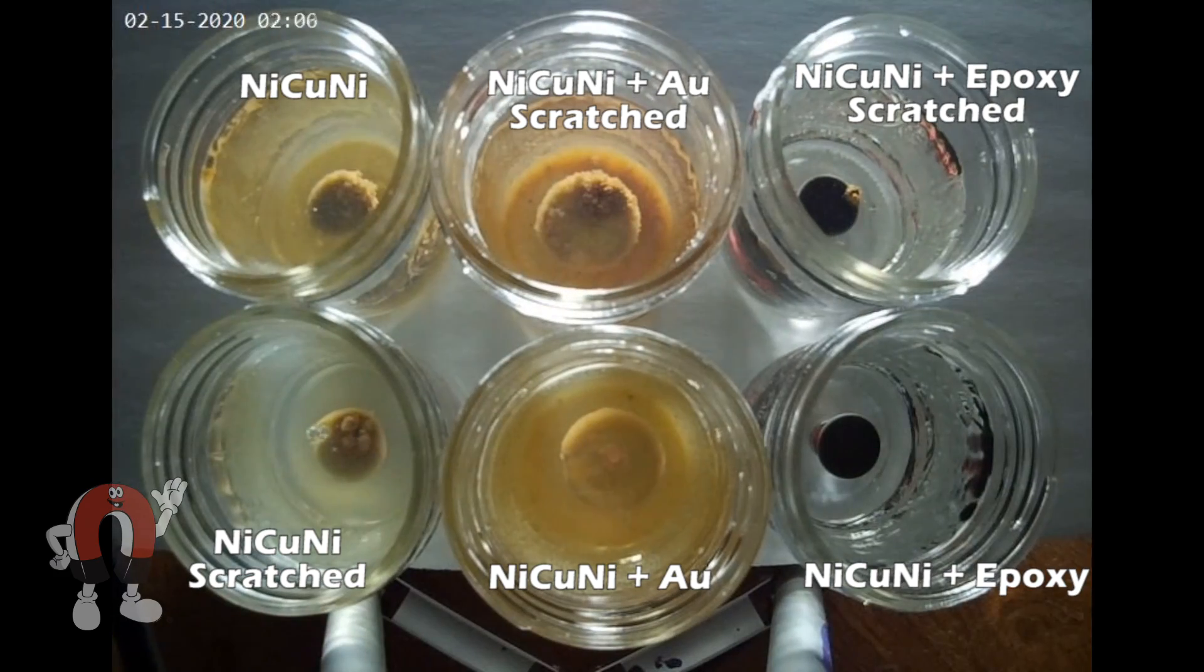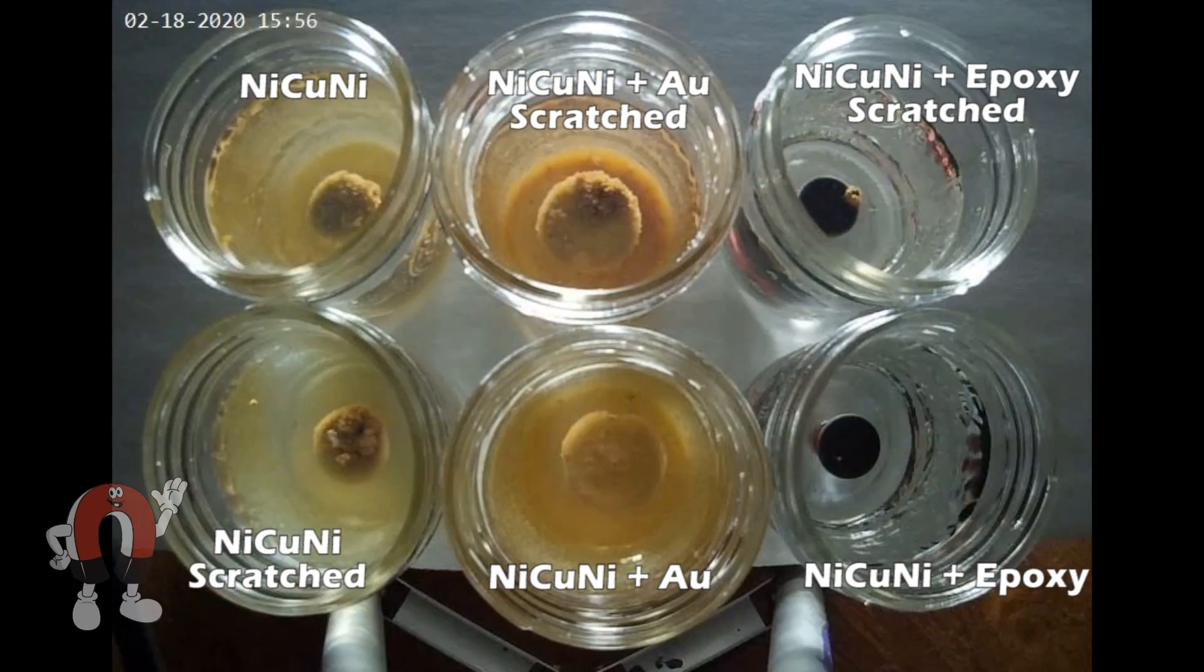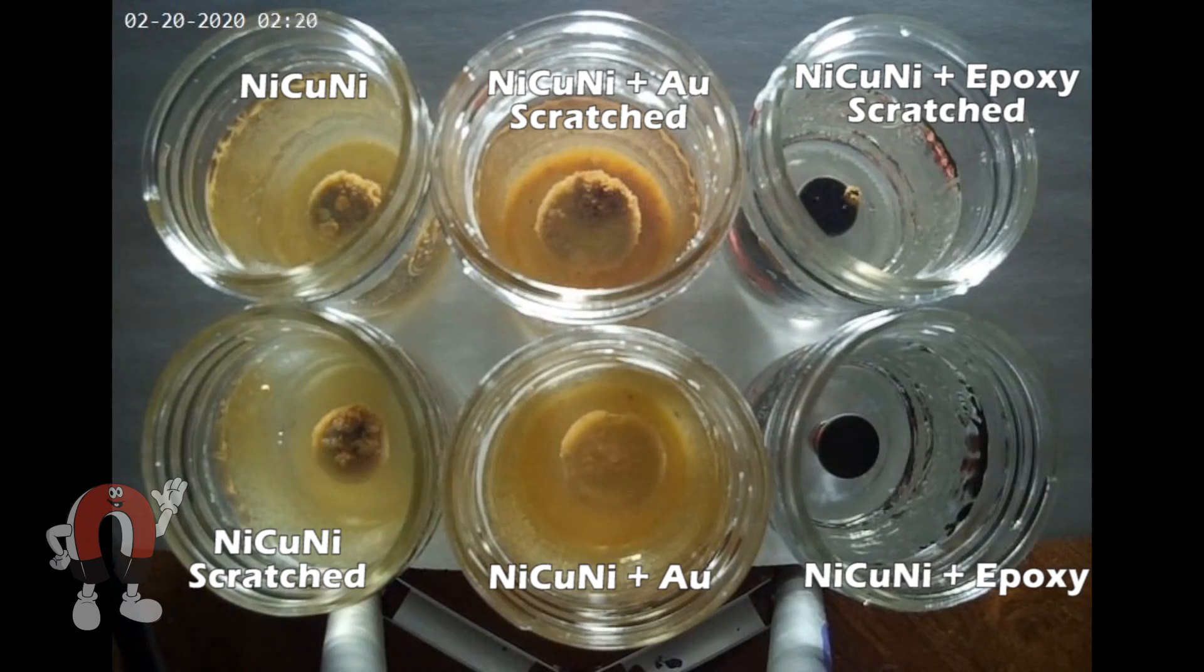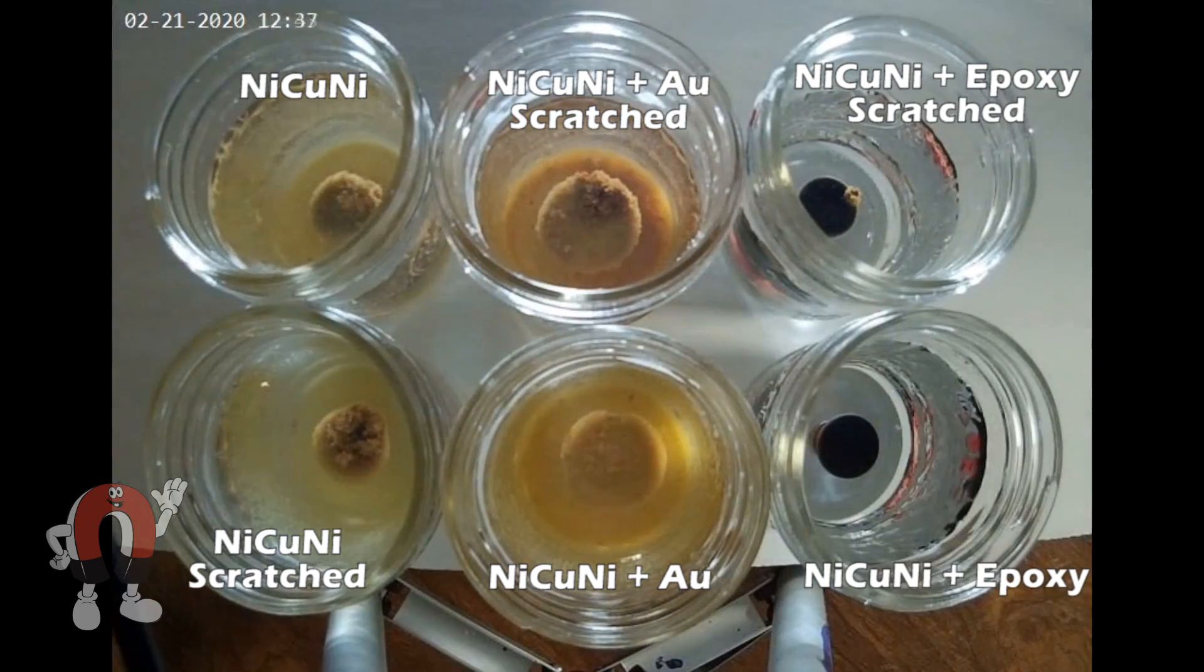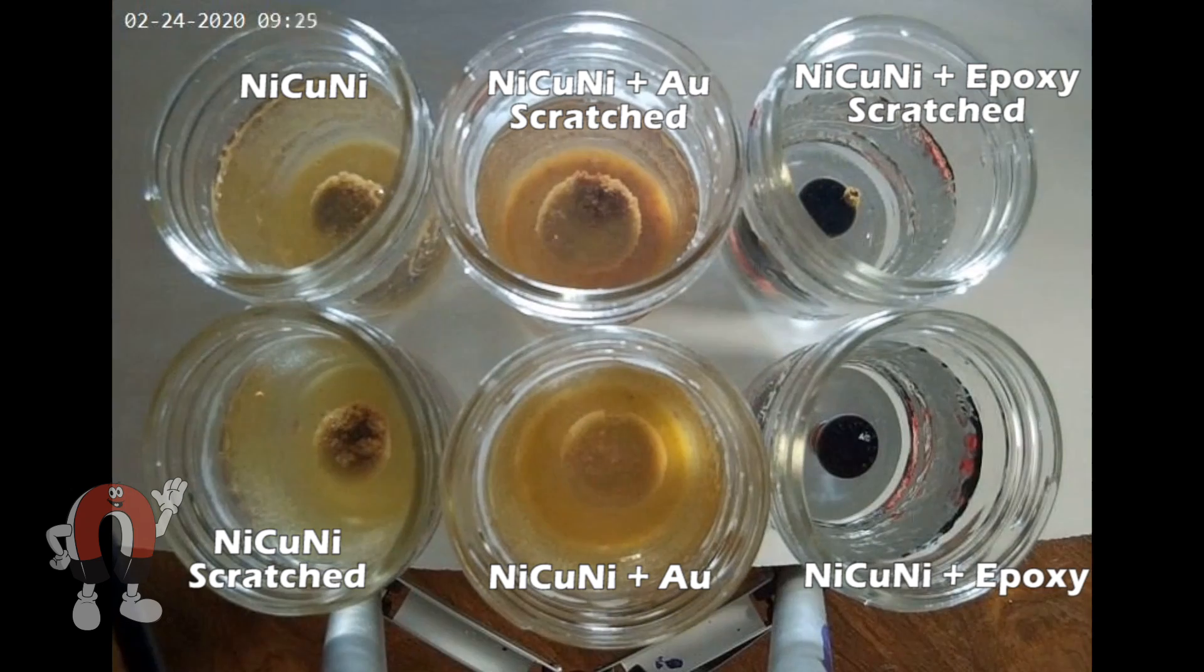After a while, the rust builds and builds over the six-week period. Now, let's take a closer look at each magnet.